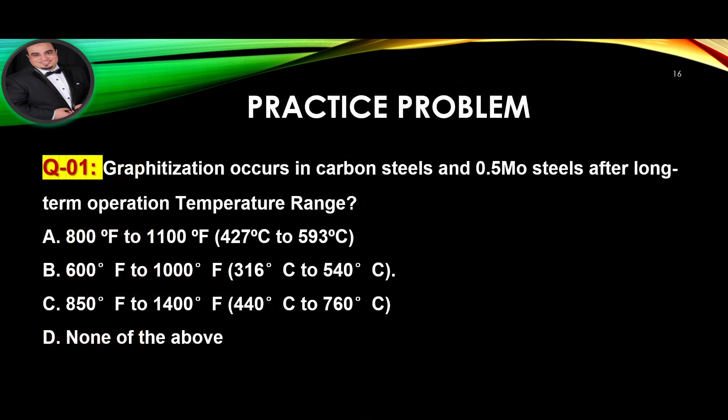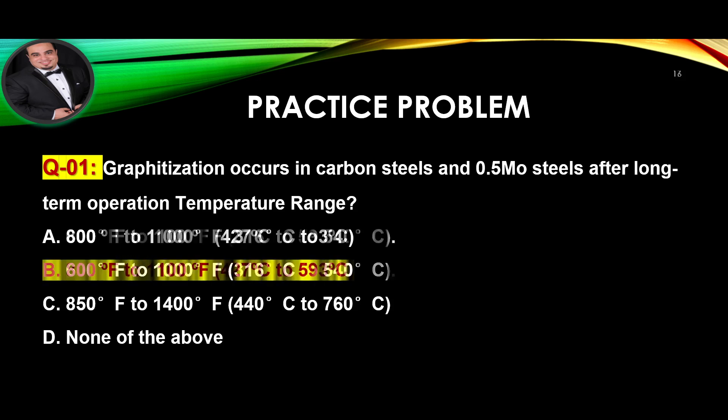Question 1: Graphitization occurs in carbon steels and half molybdenum steels after long-term operation — what is the temperature range? Answer is B.